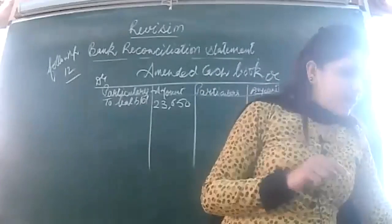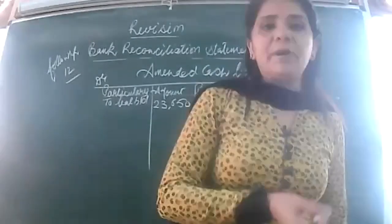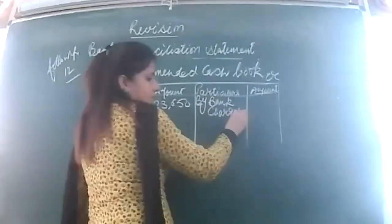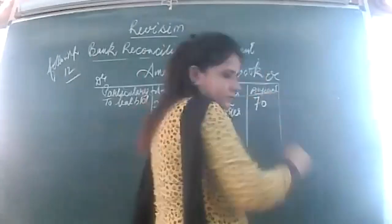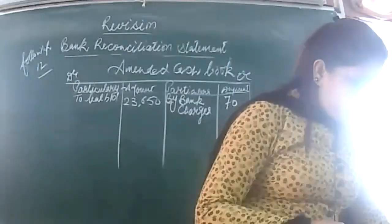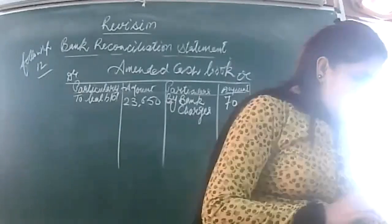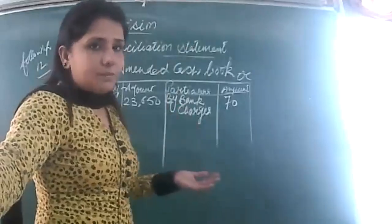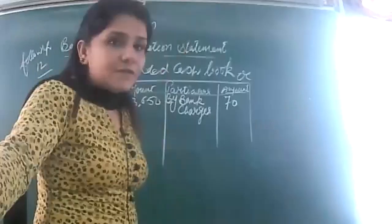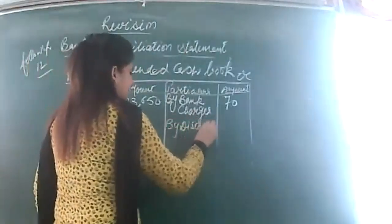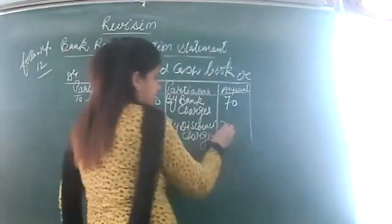Bank charges of rupees 70 — I will write that as a point. Next: a bill of exchange of rupees 5,500 discounted with the bank is entered in the cash book without recording the discount charges. It means the full amount was entered in the cash book. Since you have increased your balance, I will be writing here 'by discount charges' to correct this.